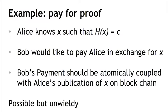Bob would like to pay Alice in exchange for knowing this value of x. Maybe x is the solution to some very valuable proof-of-work computation. More generally, it doesn't need to be a hash function input — it could be the solution to any pure function. There is some arbitrary function f, and Alice claims to know some input x such that f(x) equals some known value, and Bob would like to pay her for knowledge of this value.